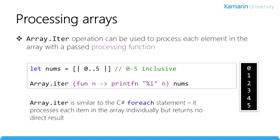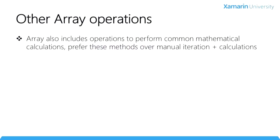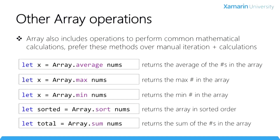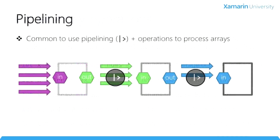We can perform processing on the array using the Array.iter function, which takes a function as a parameter. The function can do whatever it likes to the input values, but it must return nothing — that's the unit result. Here, we're passing a function that prints out each value to the console. There are also a bunch of aggregate functions similar to LINQ: minimum, maximum, sum, sorting, concatenation, folding accumulators, searching, partitioning, permutations, and map-reduce capabilities. The collections.array module is quite robust and well worth checking out.